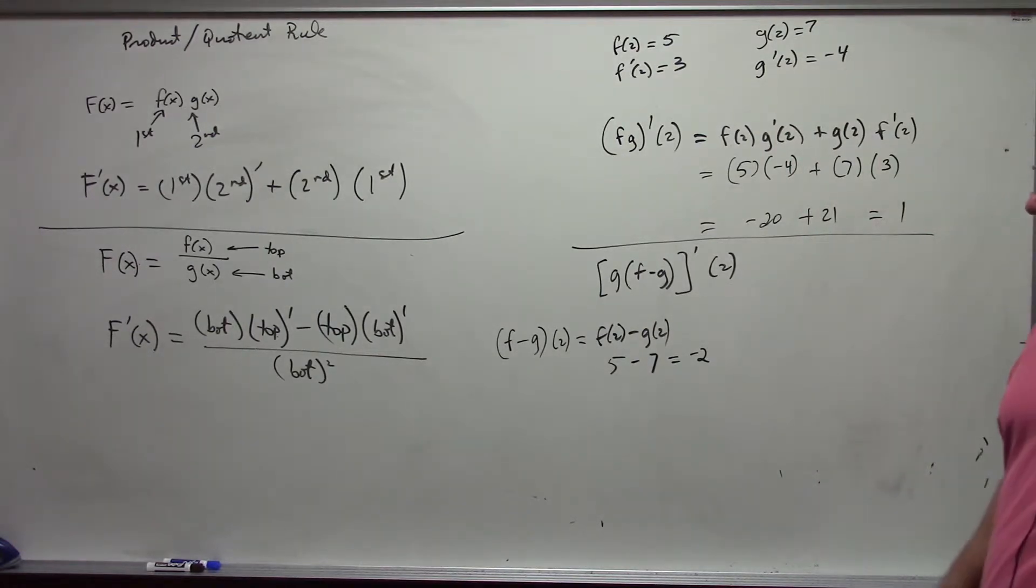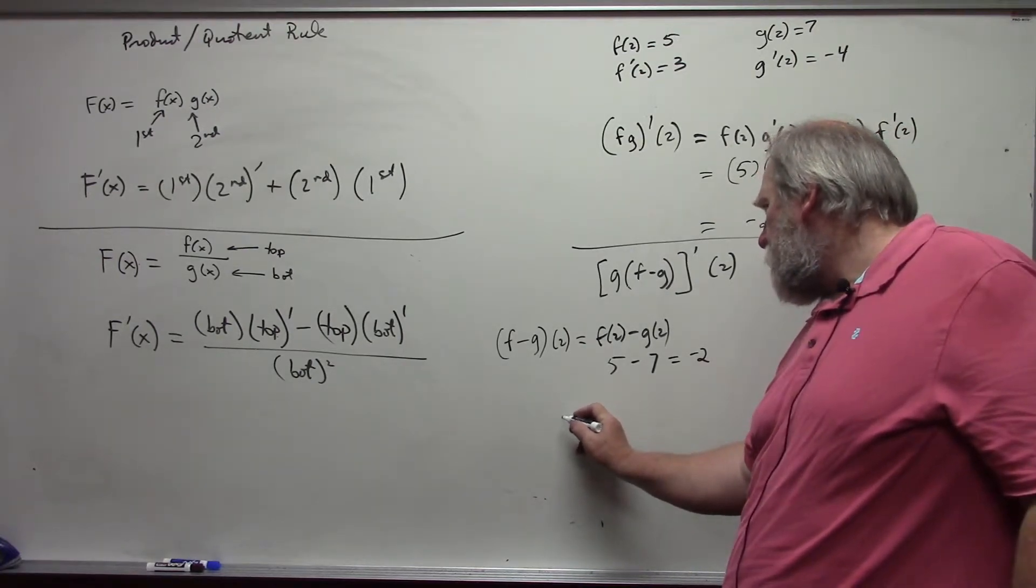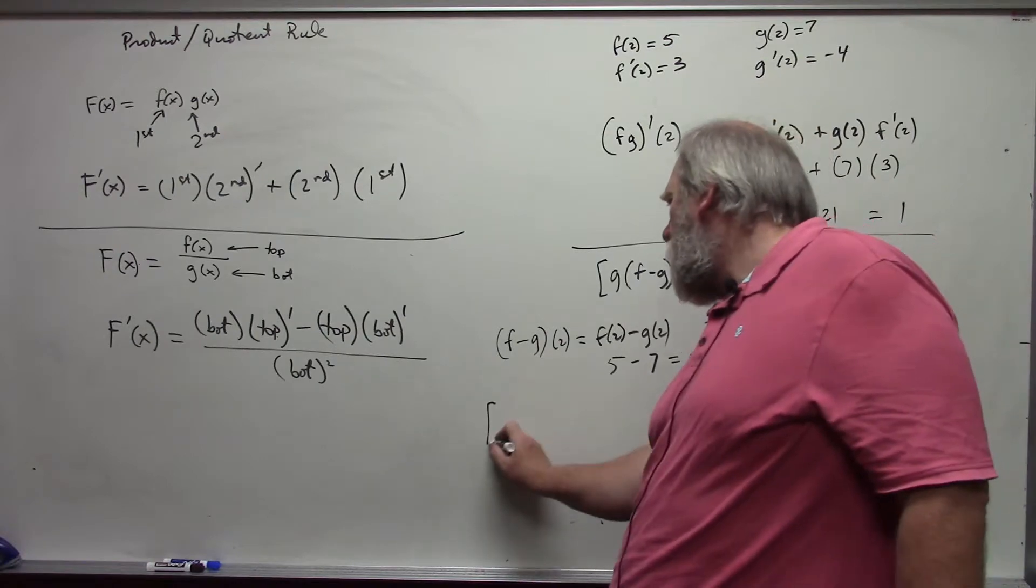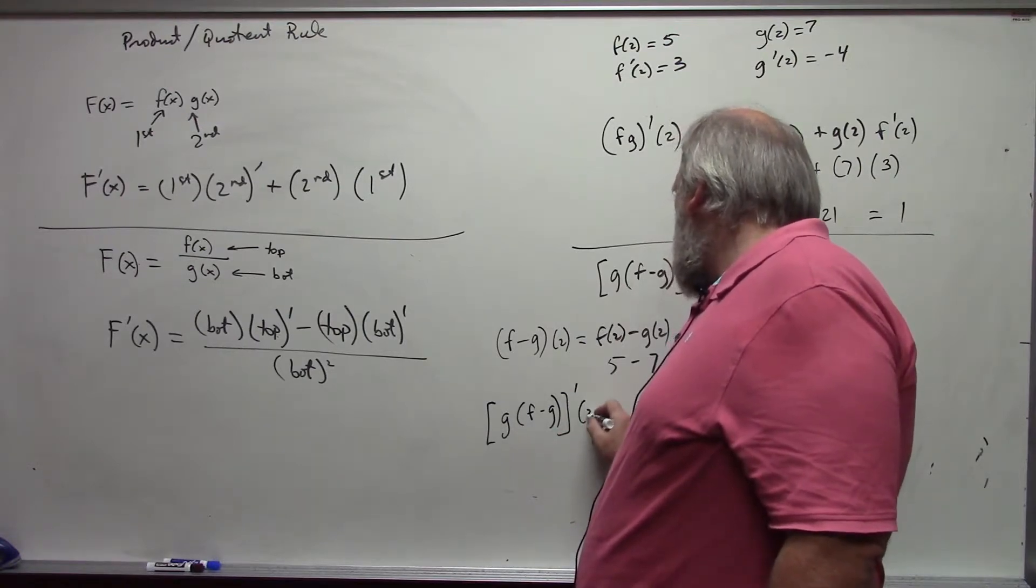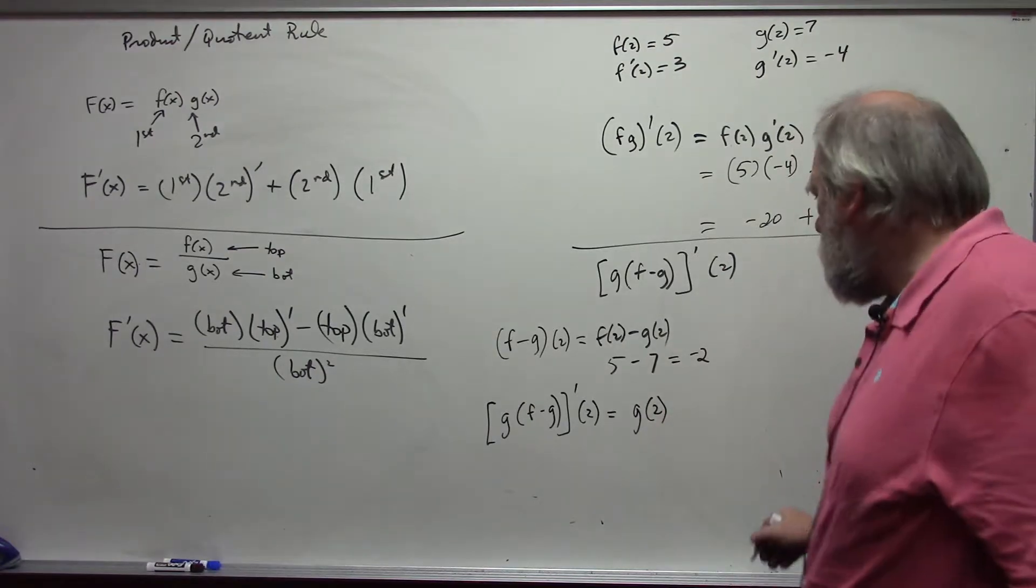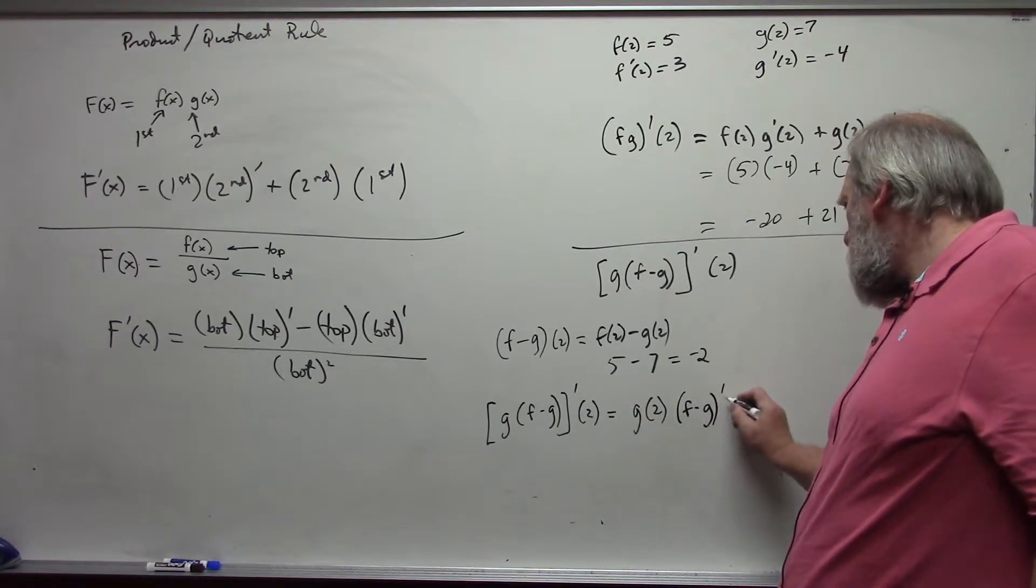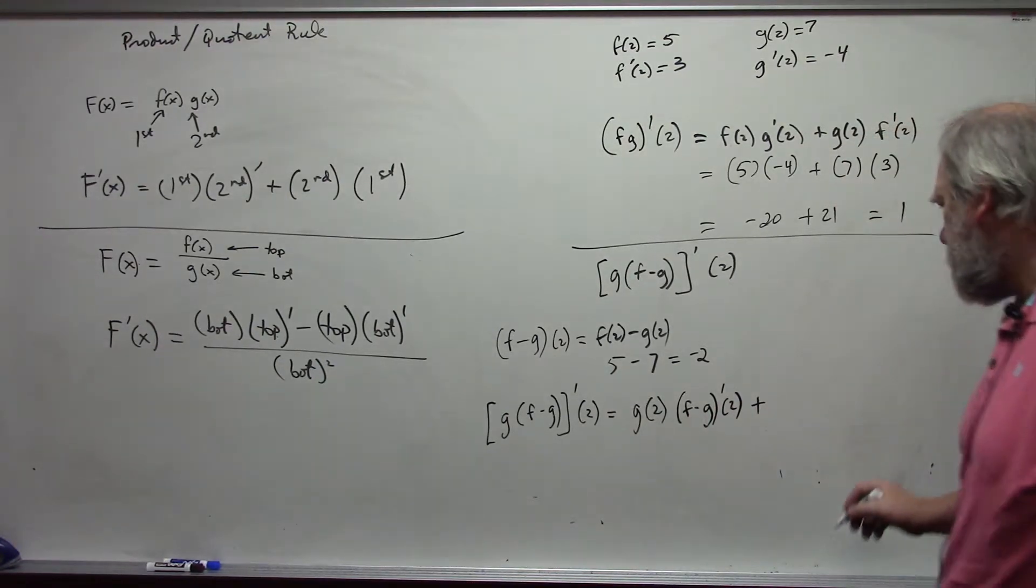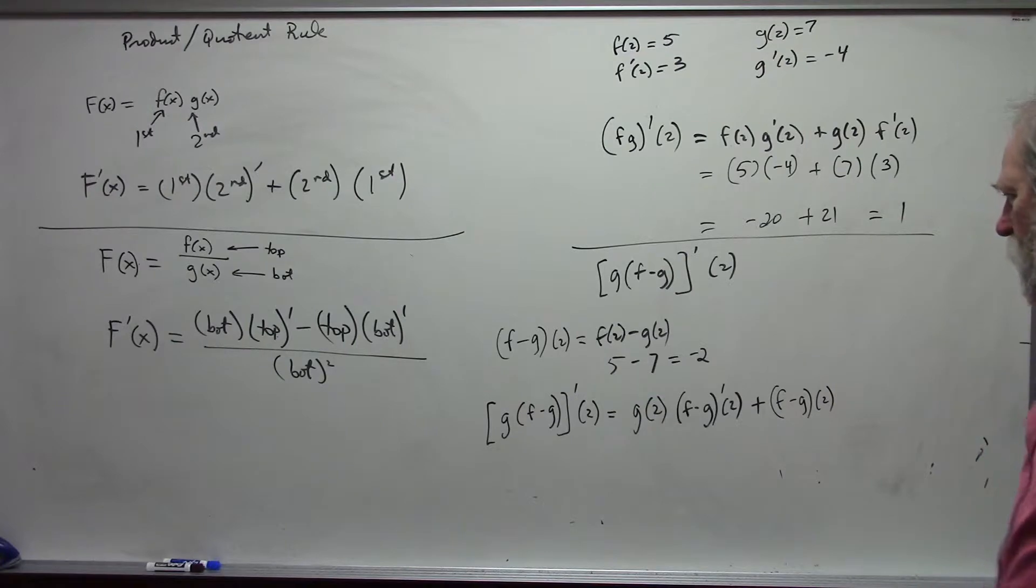And now I will use the product rule. So let me actually rewrite this, g times f minus g prime at 2, would be first, which is g of 2, times the derivative of the second, f minus g prime at 2, plus the second, f minus g at 2, times the derivative of the first.